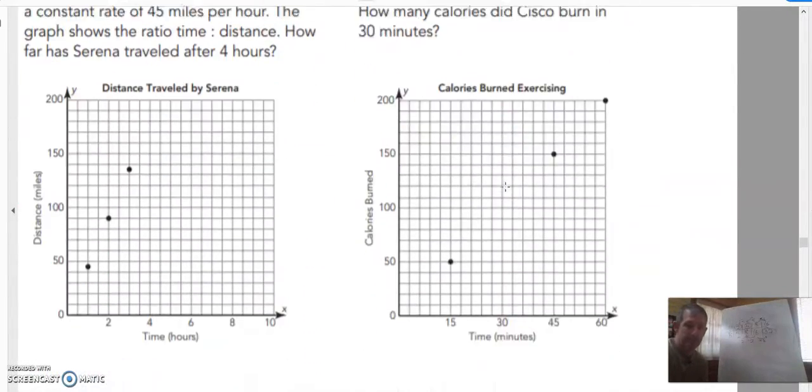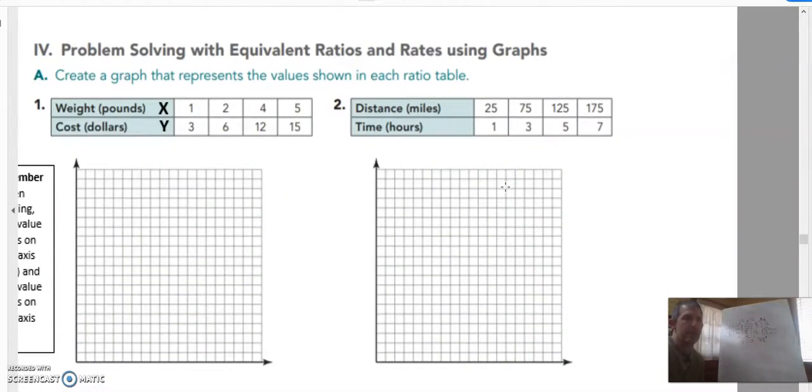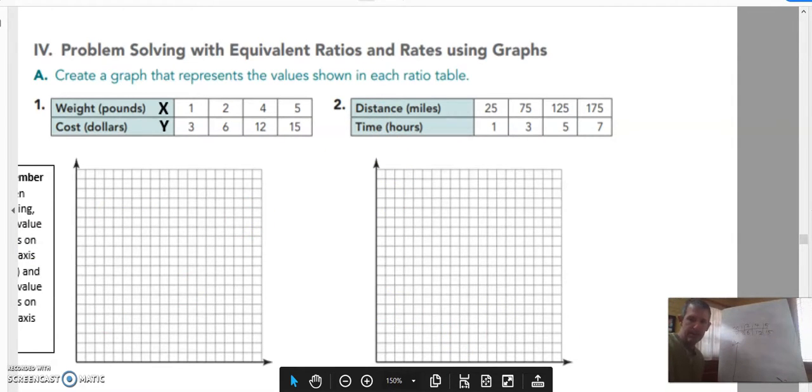Finally on this page, problem solving with equivalent ratios. Here they give us the whole table. I'm just going to summarize by saying, here's the X value, here's the Y value. It's one and three, two and six, four and 12, and five and 15. And then we're given a place to graph. My graph's not going to be as neat as the graph here on this page, but at least you'll hopefully be able to see what you need to do to set it up. This is the X value, this is the Y value. So here's the X axis, here's the Y axis.